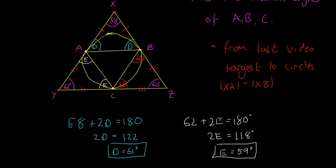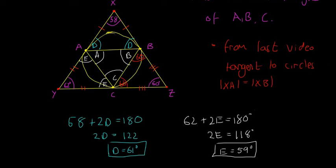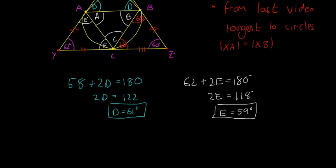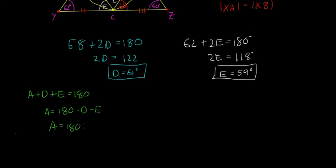Looking at inside angle A: A plus D plus E equals 180 degrees. So A equals 180 minus D minus E, which is 180 minus 61 minus 59. That means A equals 60 degrees.